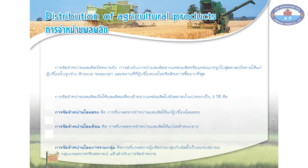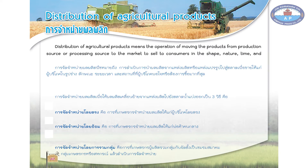Distribution of agricultural products means the operation of moving the products from production source or processing source to the market, to sell to consumers in the shape, nature, time, and place consumers are satisfied or want to purchase the most.